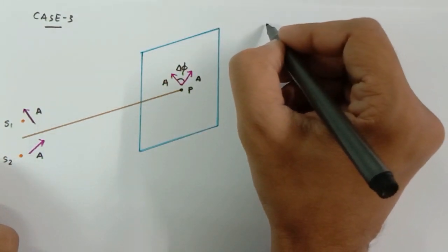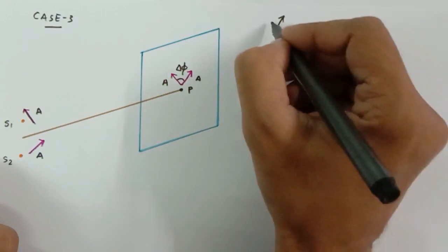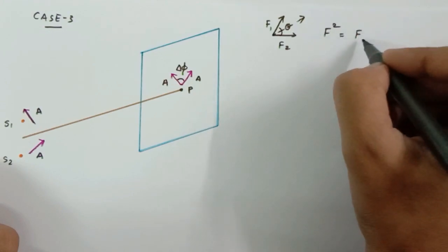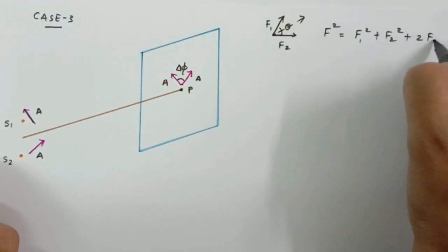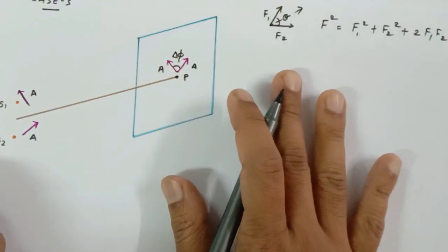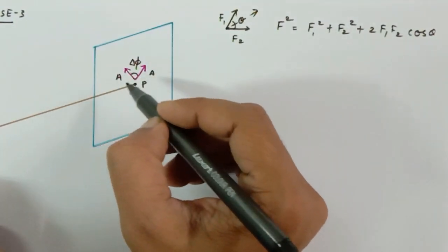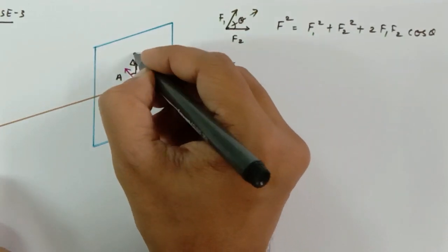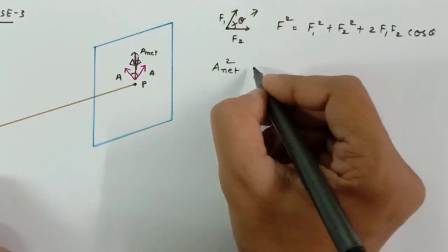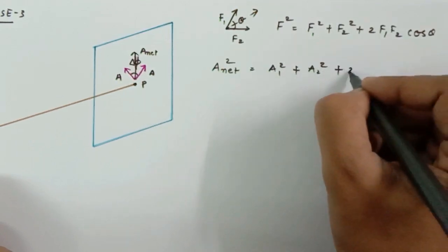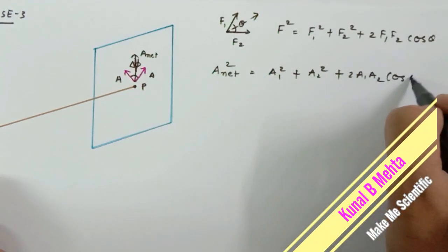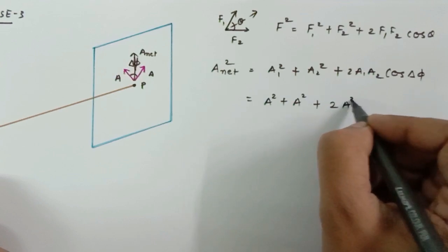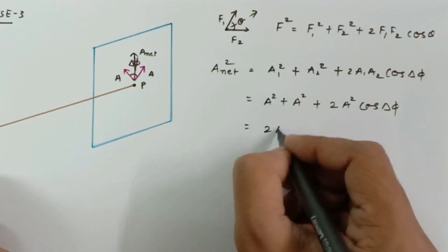We know that if two forces F1 and F2 have angle theta between them, then the resultant: F² = F1² + F2² + 2·F1·F2·cos(θ). In the same way, considering amplitudes a1 and a2, A_net² = a1² + a2² + 2·a1·a2·cos(Δφ). Since a1 and a2 are the same, this becomes a² + a² + 2a²·cos(Δφ).